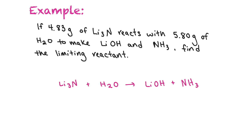We start with Li₃N + H₂O → LiOH + NH₃. We have 3 lithiums on the reactant side but only 1 on the product side, so we put a 3 in front of LiOH. That gives us 3 oxygens and 3 hydrogens on the product side, so we put a 3 in front of H₂O — giving 6 hydrogens, which matches the product side. Our balanced equation is: Li₃N + 3H₂O → 3LiOH + NH₃.